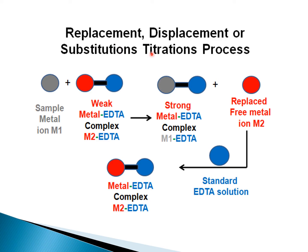As shown in the diagram, the sample metal ion M1 is added to a weak metal-EDTA complex. Since the M2-EDTA bond is weak, M1 replaces M2, forming a strong M1-EDTA complex. The displaced free metal ion M2 is then titrated against a standard EDTA solution, forming an M2-EDTA complex.